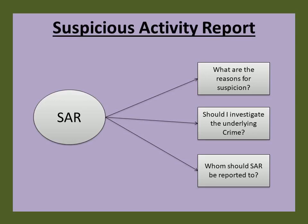Most transaction monitoring officers ask: should they investigate the underlying crime of the suspicion? The answer is no. Banks are only required to report suspicious activity that may involve money laundering violations, terrorist financing, and certain other crimes above prescribed thresholds. Banks are not obligated to investigate or confirm the underlying crime, e.g., terrorist financing, money laundering, tax evasion, identity theft, and various types of fraud. Investigation of the underlying crime is the responsibility of law enforcement.